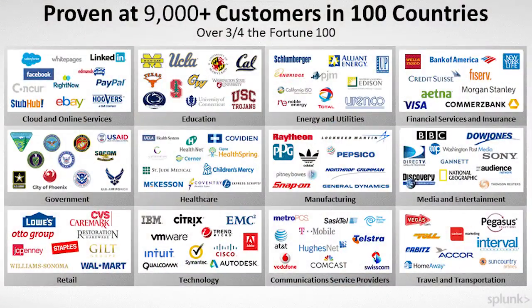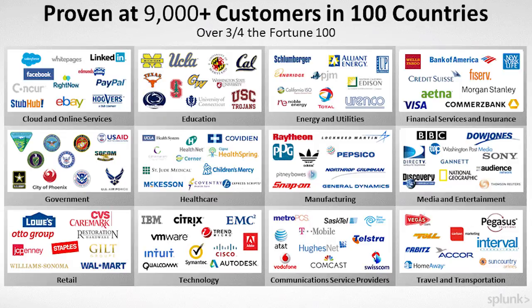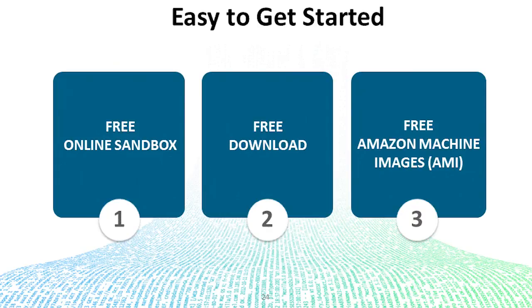This is a NASCAR slide — 9,000 customers over 100 countries. We are really disrupting the data and analytics space. A number of government agencies use us, many of which we can't name, but you see some logos there. Very easy to get started — you can do a free download of Splunk Enterprise or Hunk, do an online trial using one of our sandboxes, or if you're on AWS, there are AMIs for Splunk and Hunk that you could start using.